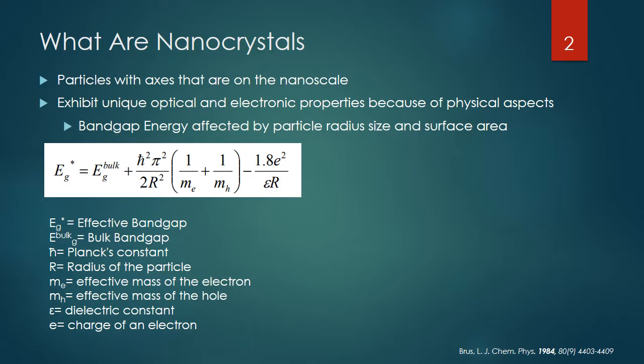The important variables to notice are the fact that the radius of the particle directly affects how the bulk bandgap energy is changed into the effective bandgap for the nanoparticle. Along with the radius, the effective mass of the electron and the effective mass of the electron hole — that is, the exciton energy — also play a factor in how much this bandgap energy is being changed.